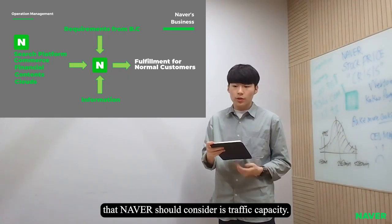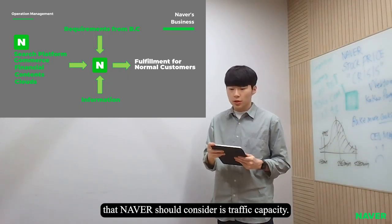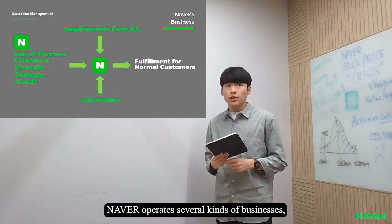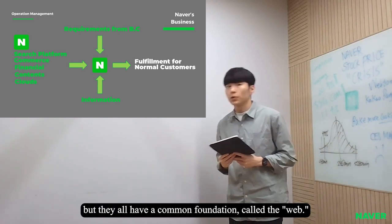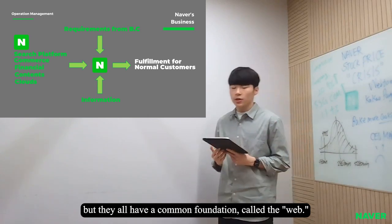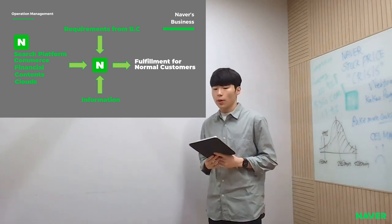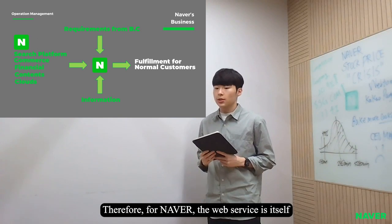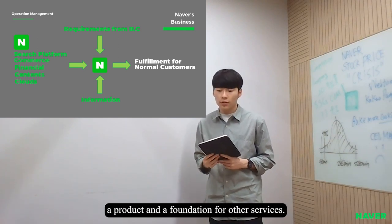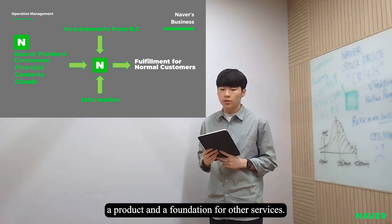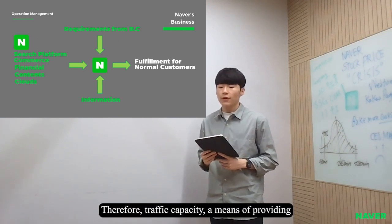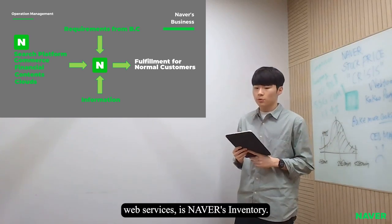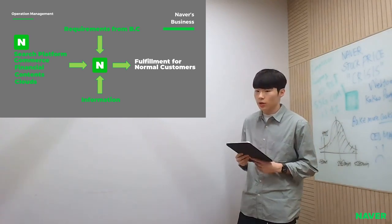The overall inventory that Neighbor should consider is traffic capacity. Neighbor operates several kinds of businesses, but they all have a common foundation called VWF. Therefore, for Neighbor, the web service is itself a product and a foundation for other services. Therefore, traffic capacity — a means of providing web services — is Neighbor's inventory.